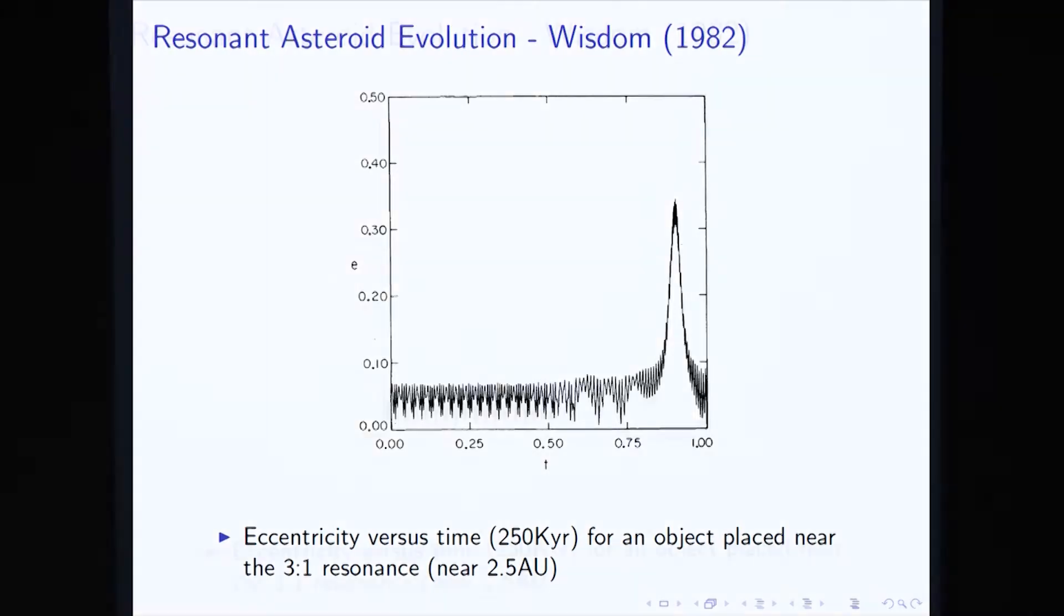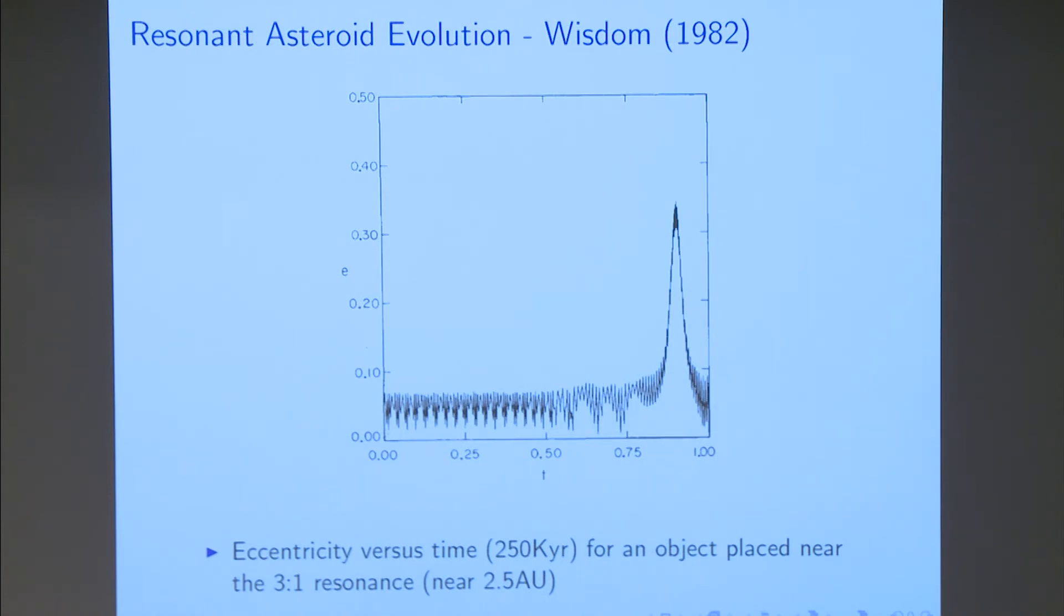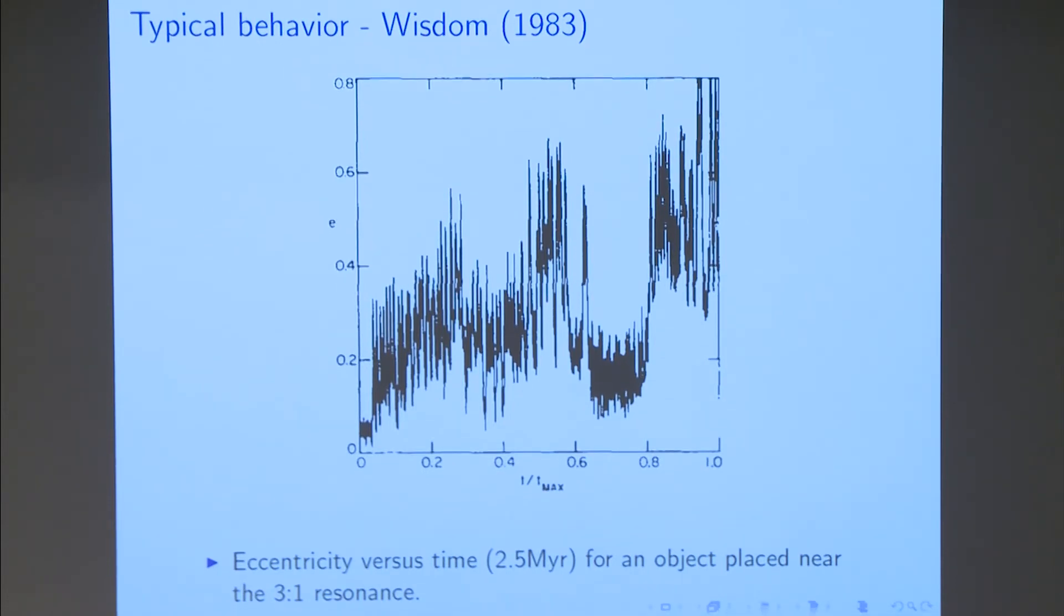And I found this very interesting chaotic behavior. This is orbital eccentricity versus time. And the typical behavior on longer time scales is this. The eccentricity versus time, now it's the time span of two and a half million years. And you can see that the orbit basically goes wild. And this is important both for the transport of meteorites to the Earth and the formation of the Kirkwood gaps, because at an eccentricity of 0.3, you cross the orbit of Mars, and so you might be removed by collision with Mars. And at an eccentricity of 0.6, you cross the orbit of the Earth. Therefore, you can transport meteorites to the Earth, but you can also remove material from the Kirkwood gaps.